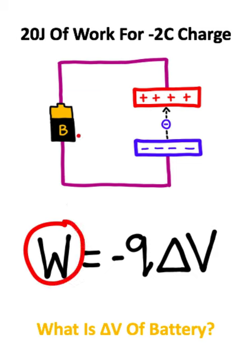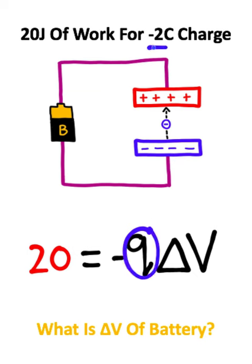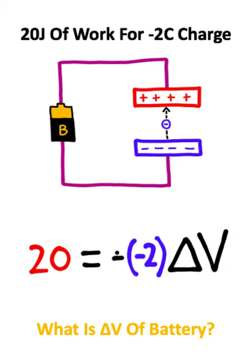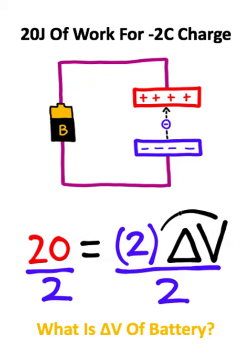The work done by the electric field is given to us as 20 joules. The charge that we're dealing with is a negative 2 coulomb charge. I can cancel the negative signs on the right side of this equation, and all I need to do from here is divide both sides of the equation by 2 to solve for the voltage.